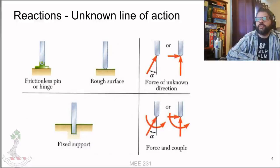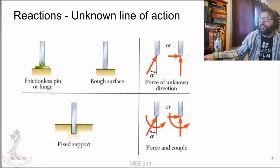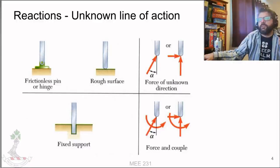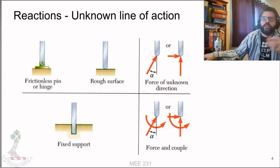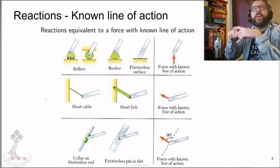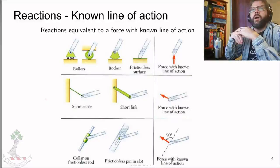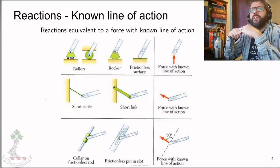Fixed supports do a combination of a force and a couple. In a 3D scenario, a fixed support generates enough reaction to prevent movement and rotation in all directions. Some reactions have a known line of action, so you can replace them with a force in a particular direction.